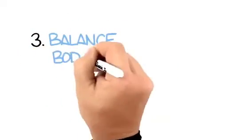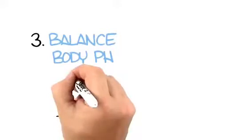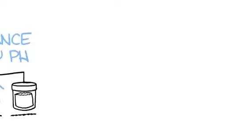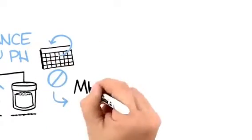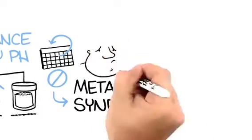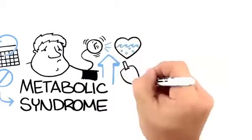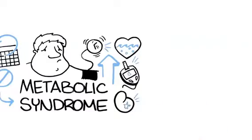3. Balance body pH. Research shows that raising the pH of your urine by just 1 pH can prevent or eliminate the symptoms of metabolic syndrome, such as obesity, high blood pressure, high cholesterol, high blood sugar, and kidney stones.